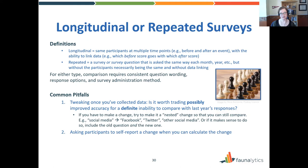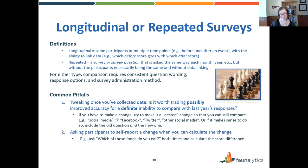Another pitfall in repeated or longitudinal surveys: asking people to self-report a change in themselves. For instance, if you want to know whether people are eating less meat over time, ask them which foods they eat — including meat — both before and after your event, and then calculate the difference from one time to the other. If you're doing that within one person, that's great.